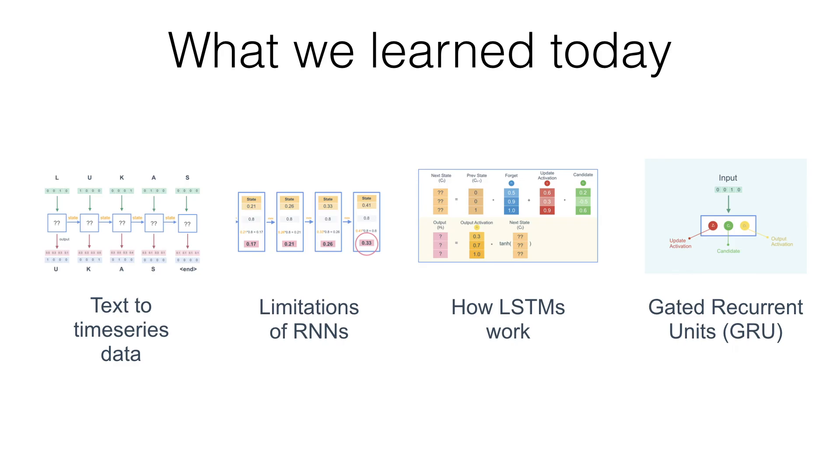Today we went through exactly how simple RNNs, LSTMs, and GRUs work, so hopefully you have an intuition about where to apply them. But maybe more importantly, we saw for the first time how to take text and turn it into time series data, make predictions from it, and use those predictions to generate crazy pranks or internet memes with machine learning. You can take this code and feed it any dataset in any character encoding or language and generate all kinds of interesting predictions. If you do make some interesting predictions, please send them to me — I'd love to see what you come up with.